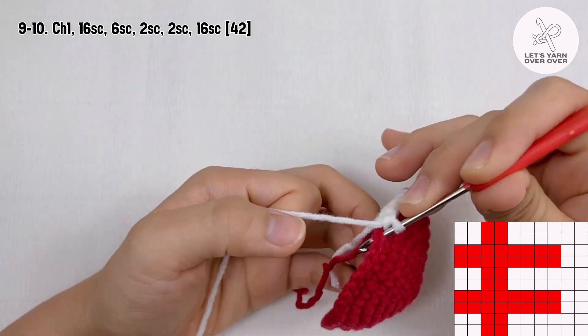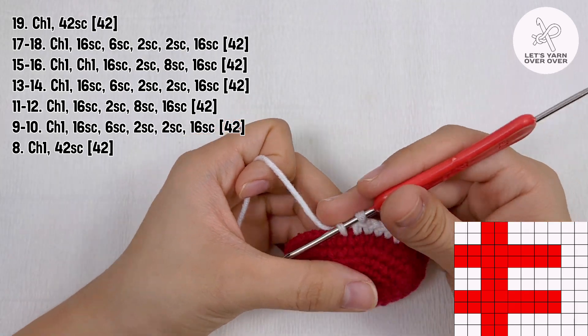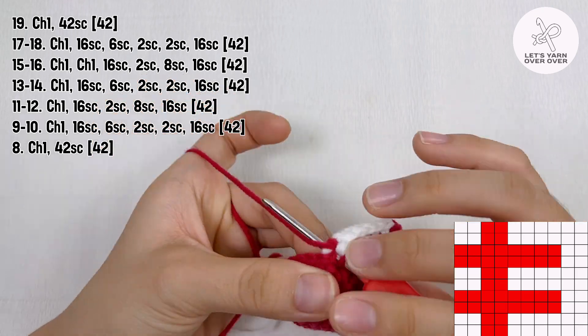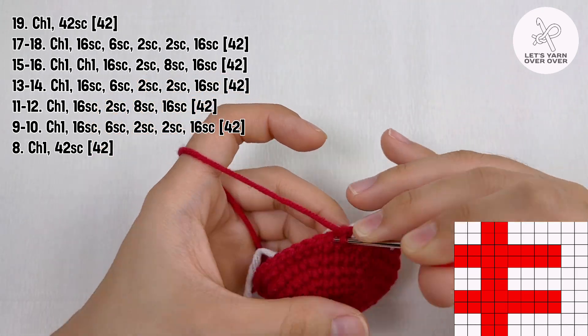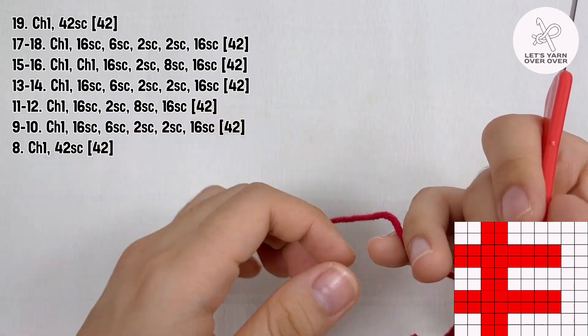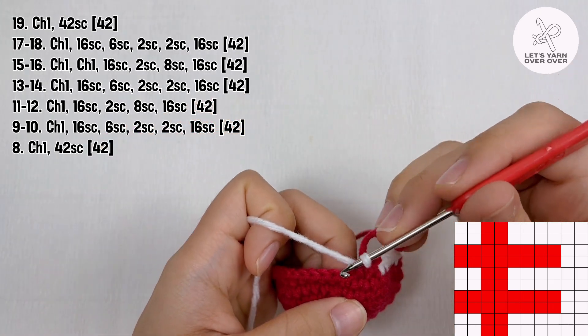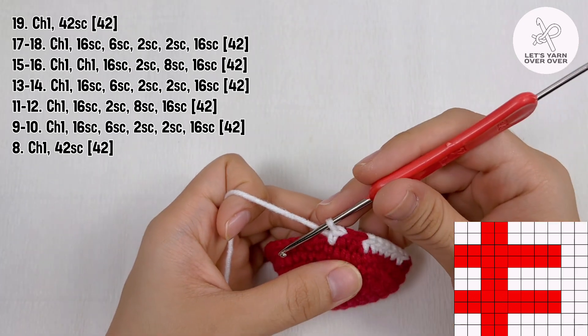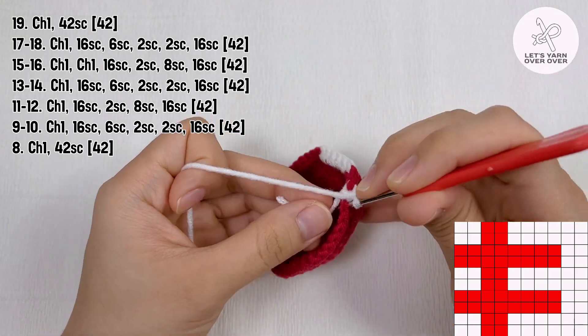I have done 6 single crochet in white. Next is 2 single crochet in red, followed by 2 single crochet in white, and then make 16 single crochet in red to end round 9.